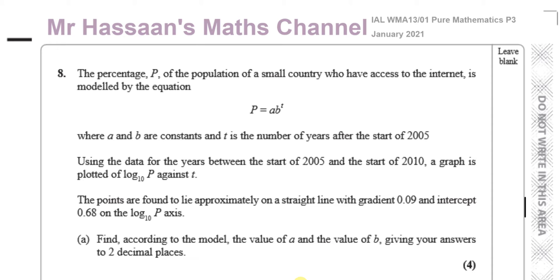Using the data for the years between the start of 2005 and the start of 2010, a graph is plotted of log to the base 10 of P against time. The points are found to lie approximately on a straight line which has a gradient of 0.09 and an intercept of 0.68 on the log to the base 10 P axis. Find, according to the model, the value of A and the value of B, giving your answers to two decimal places.